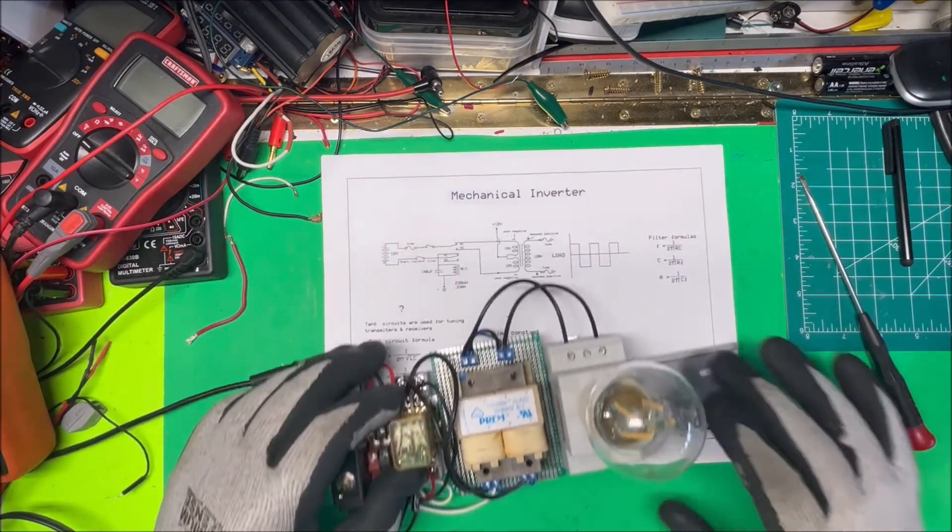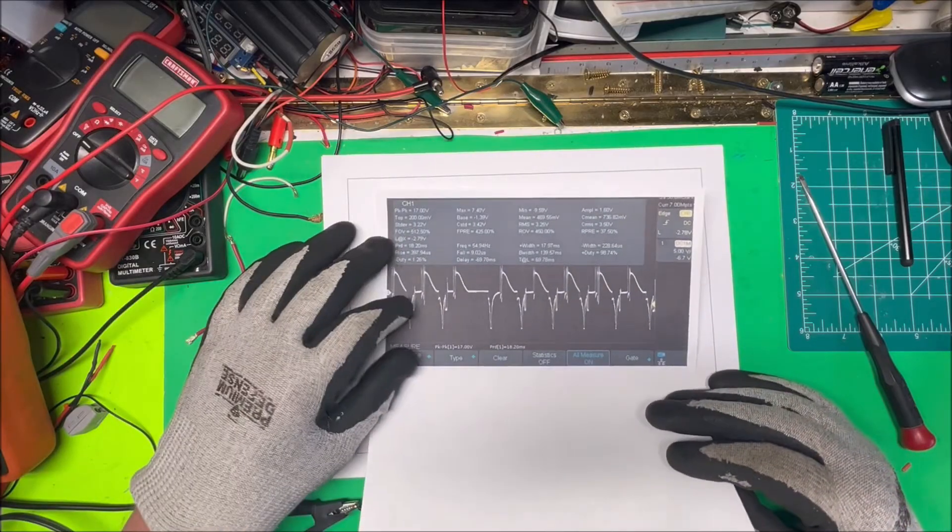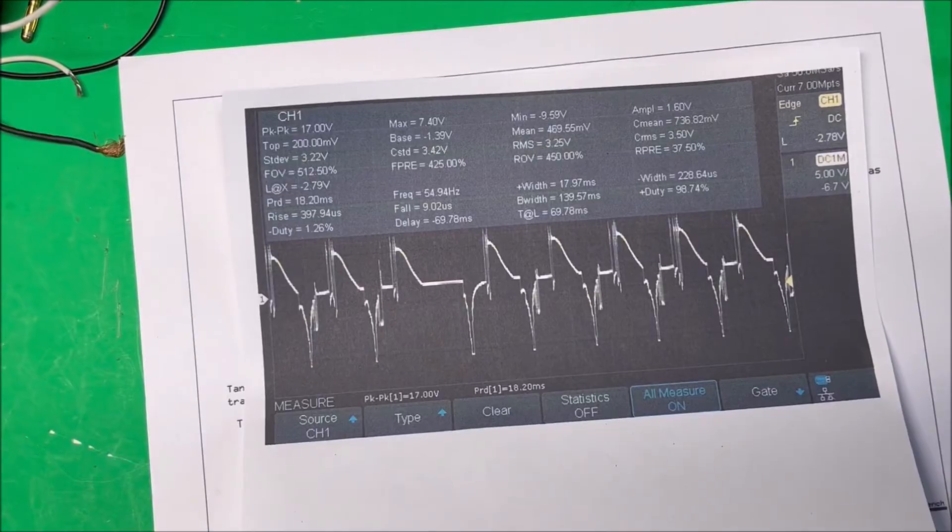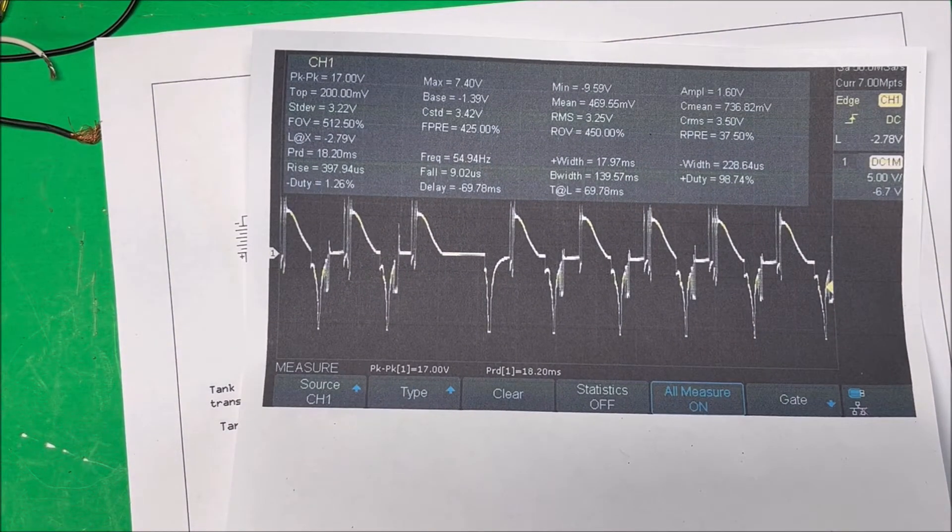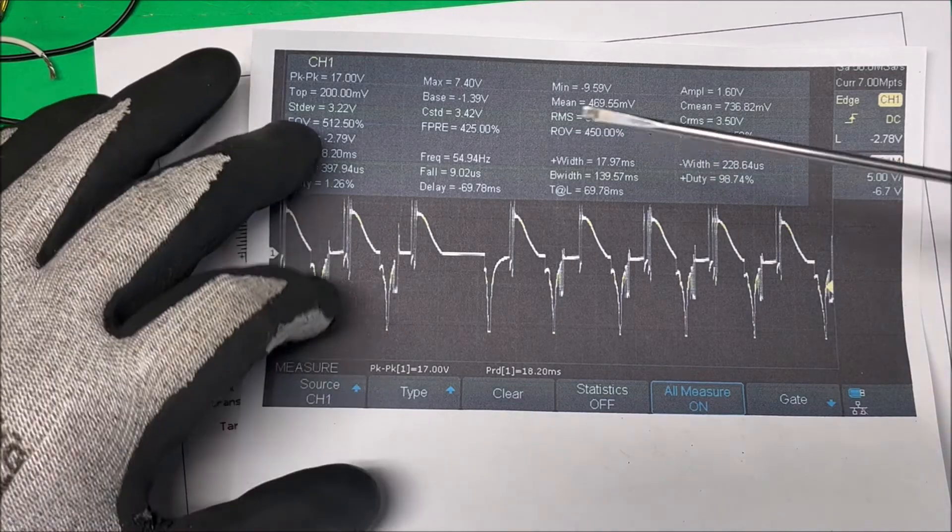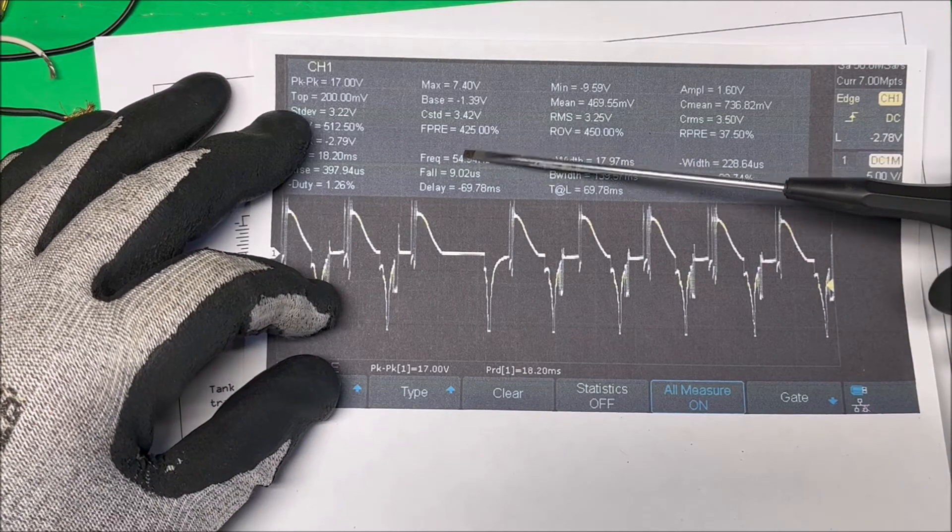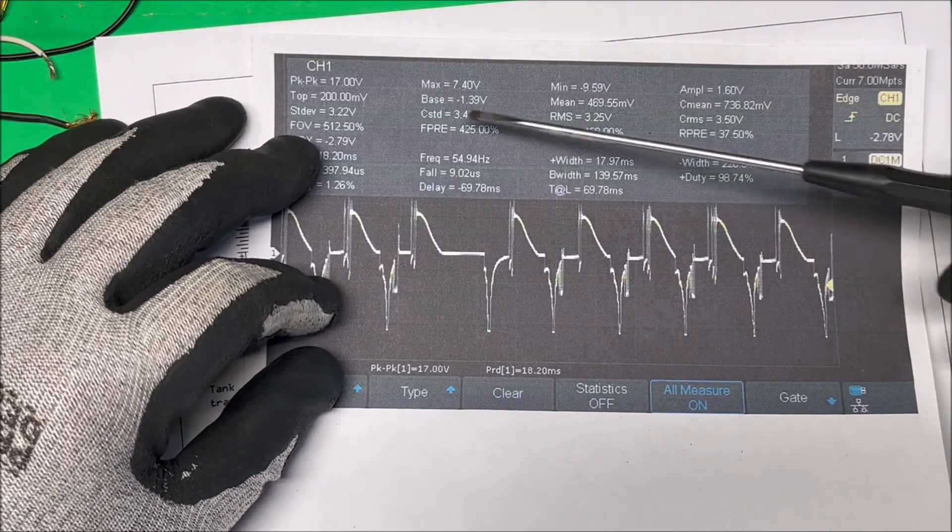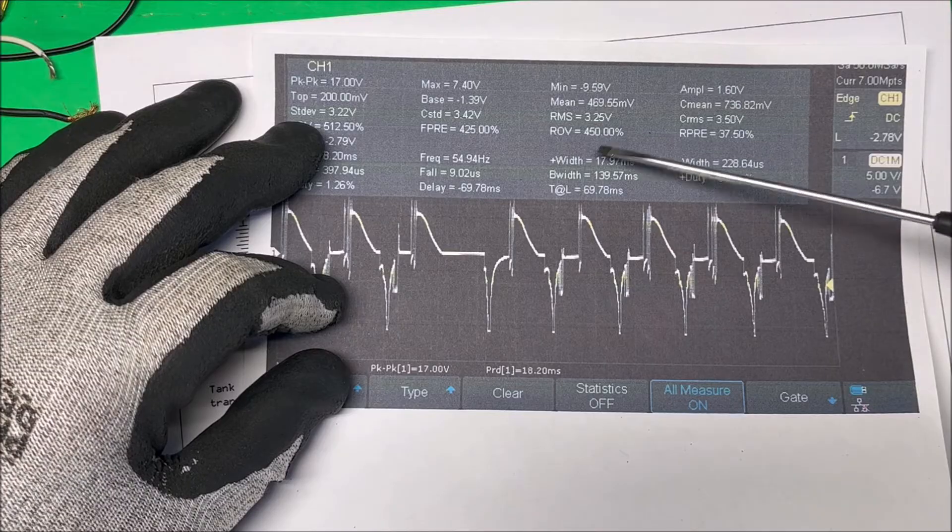So it works. I put it on the scope and here's what we got on the scope. Let me make that a little bit bigger there. So we have, with that 47 microfarad capacitor, we have 50, 55 Hertz - close to my 60 there.